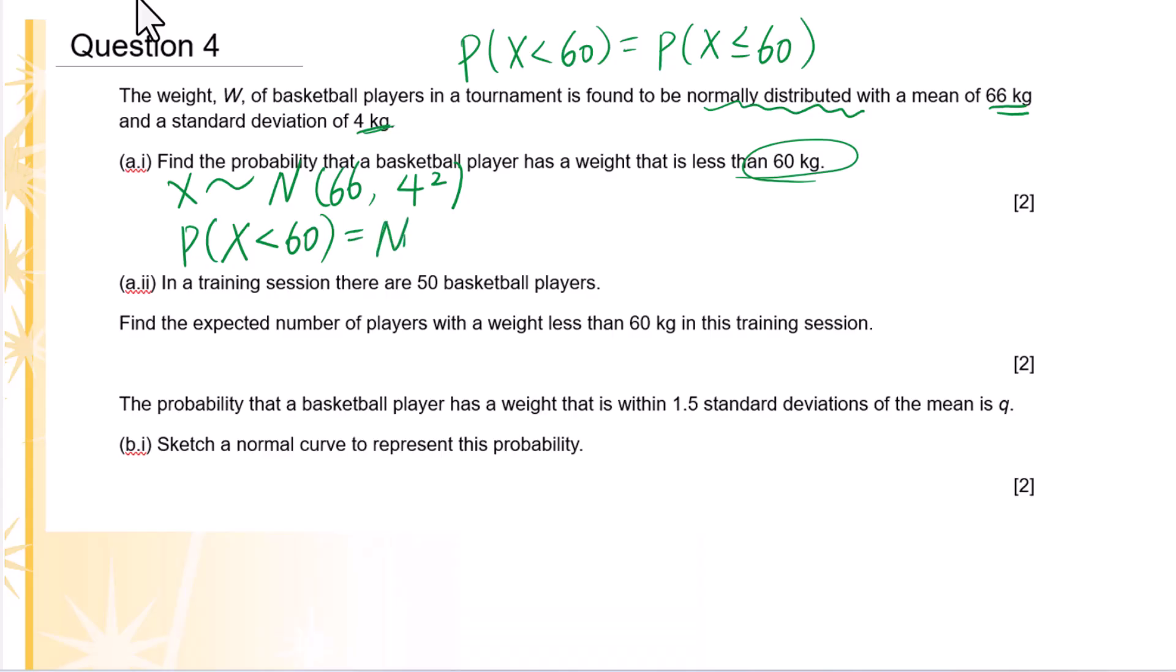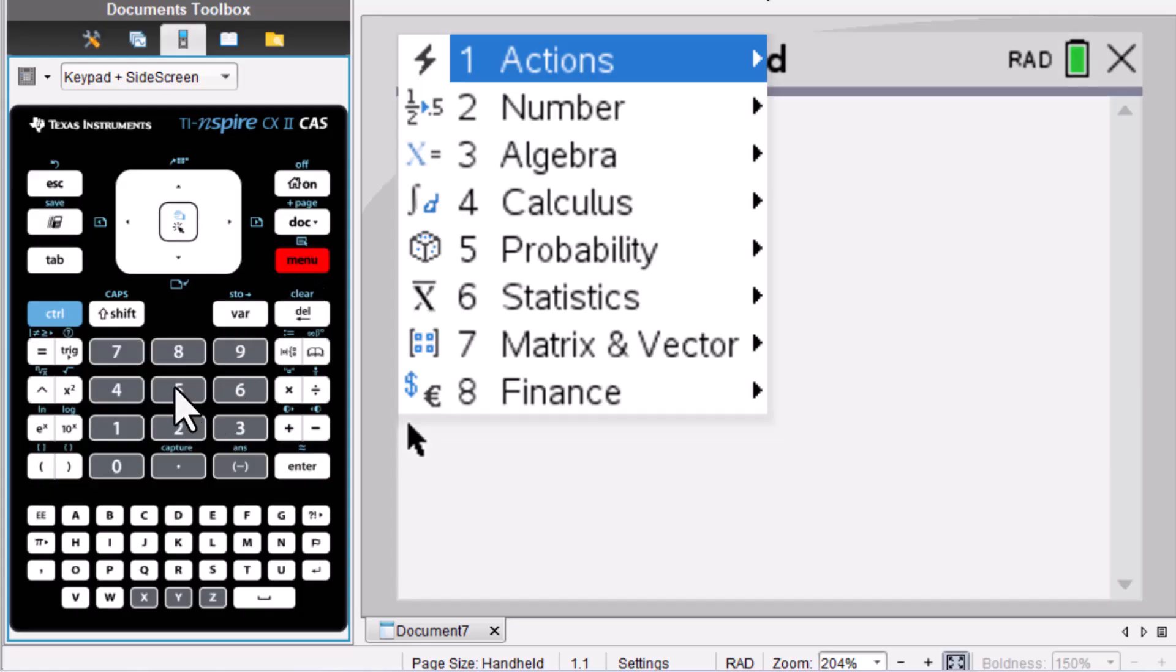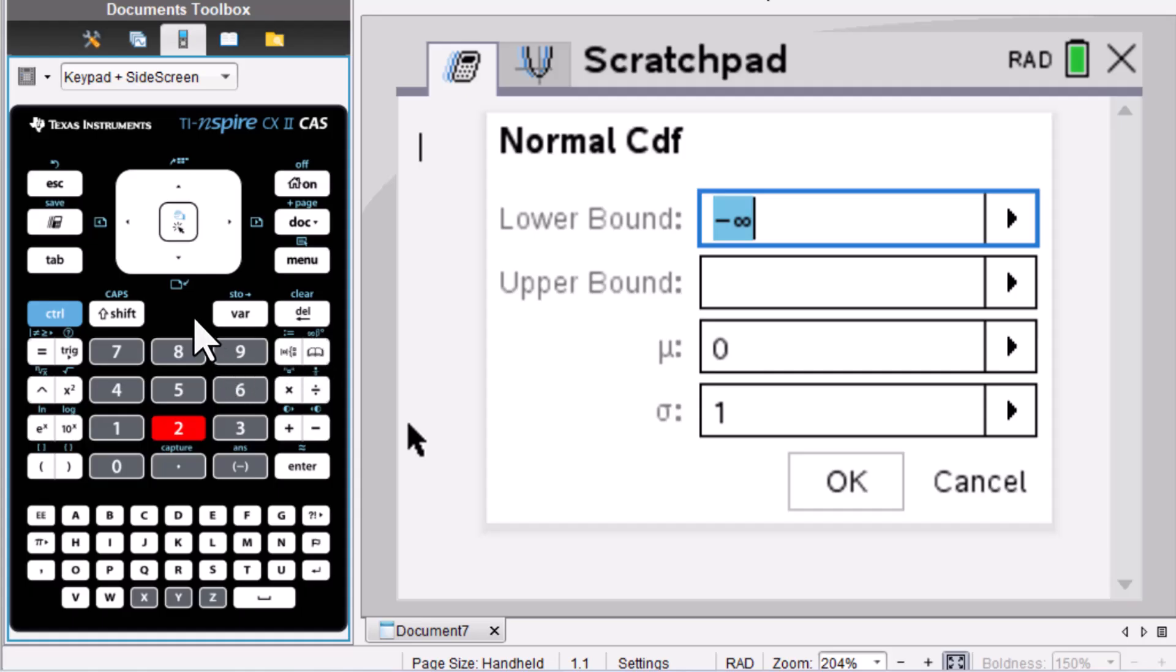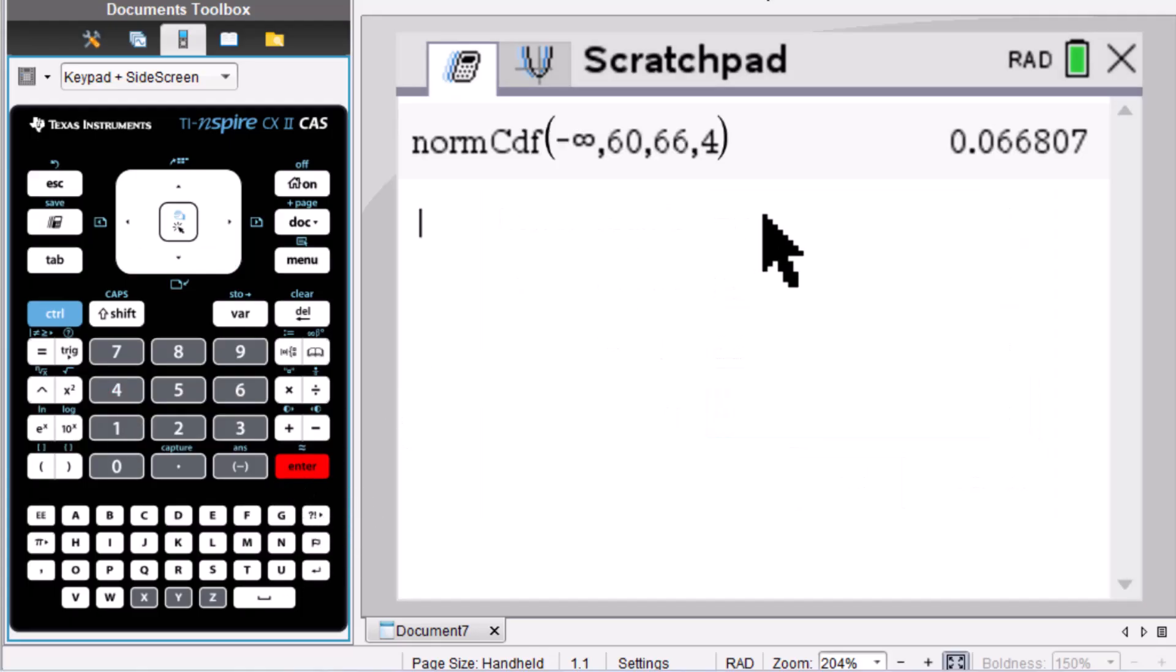We will use norm CDF, menu 552. Lower bound is negative infinity, upper bound is 60, mean 66, standard deviation 4. Enter, enter. Answer is 0.0668.